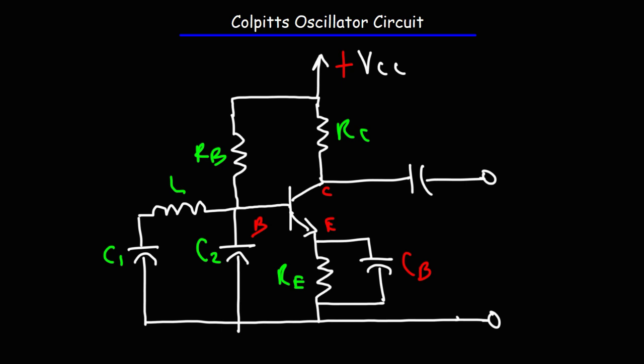To calculate the frequency of the oscillations, you use this formula. It's equal to 1 over 2π times the square root of the inductance times the equivalent capacitance of C1 and C2. And CT is going to be the product of C1 and C2 divided by the sum of those two capacitors.